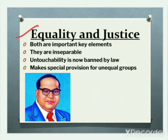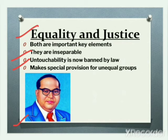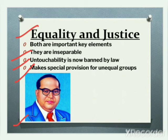Equality and justice are both main key elements of a democratic government — they are inseparable. The practice of untouchability is now banned by law in order to bring equality and justice to society. Dr. B.R. Ambedkar also realized that such practices must not continue in society. Justice can only be achieved when people are treated equally, so both equality and justice go hand in hand. The government also makes special provisions for groups within society that are unequal, like taking steps to bring the girl child to an equal level with the boy child.